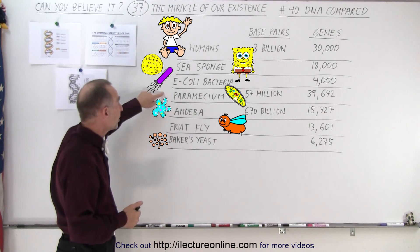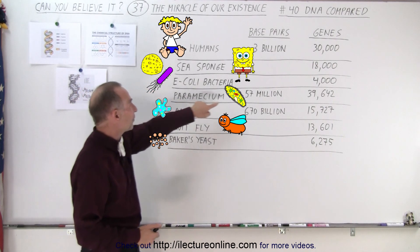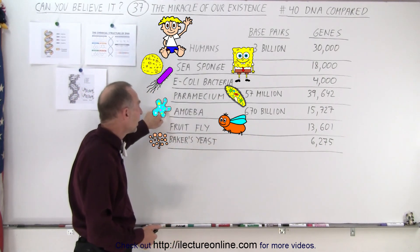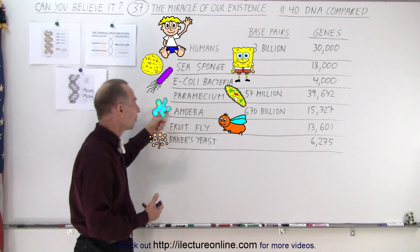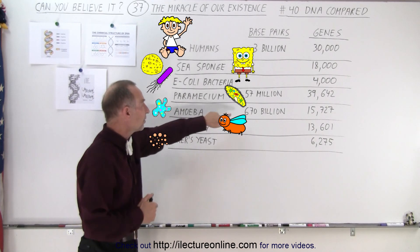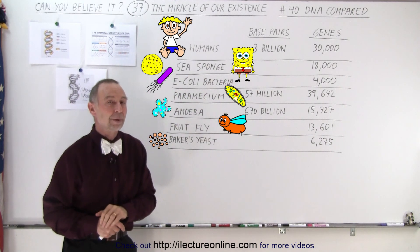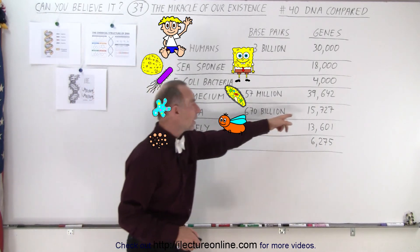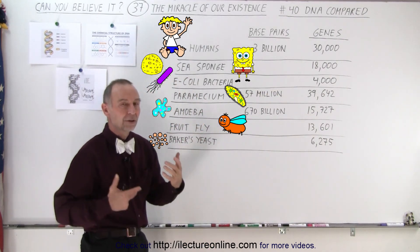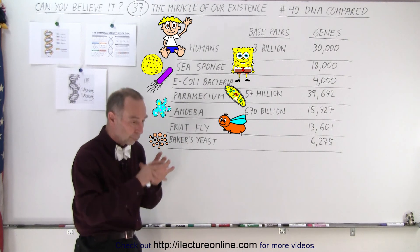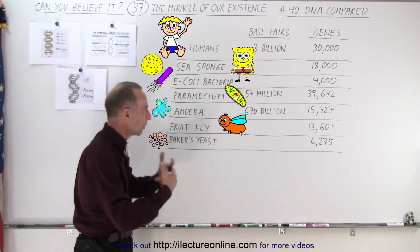Some other examples: here's a paramecium or an amoeba. These are single-celled organisms. Notice that the paramecium has 57 million base pairs, while the amoeba has 670 billion base pairs. Can you imagine a DNA structure in a single-celled life form that contains 670 billion base pairs — more than 200 times as many as the DNA structure of a human being? However, it only contains slightly less than 16,000 genes compared to our 30,000. The genes are what the DNA uses to tell the organism how to build its protein chains and structure.